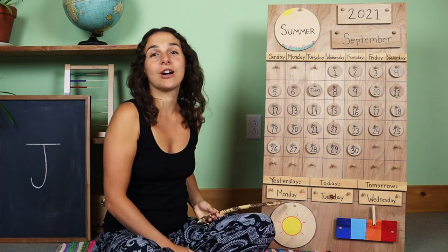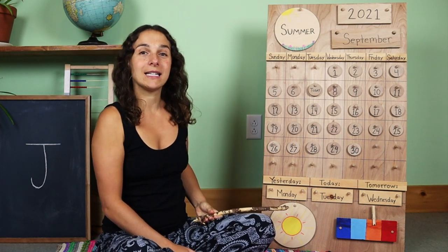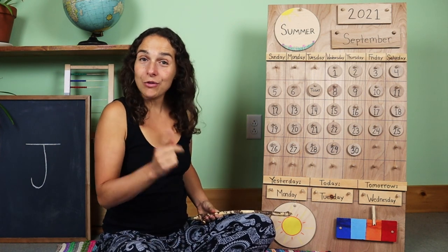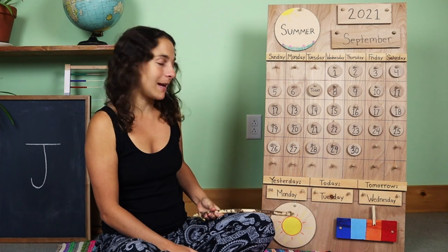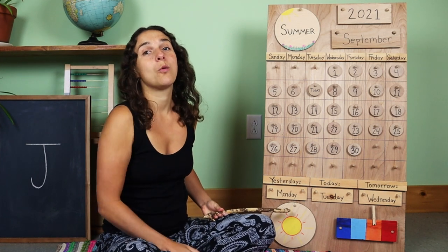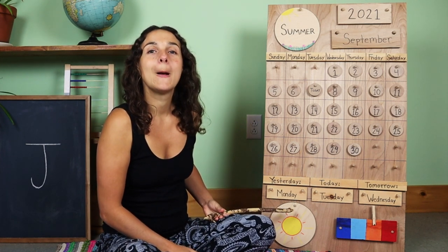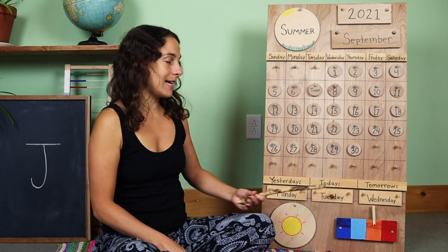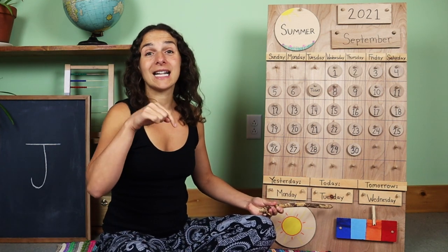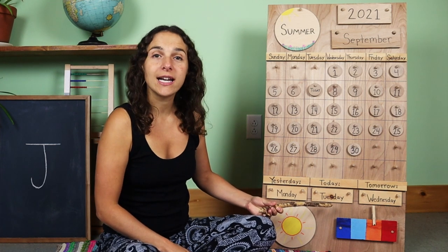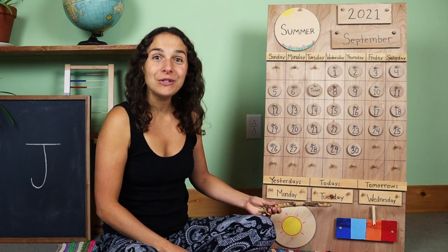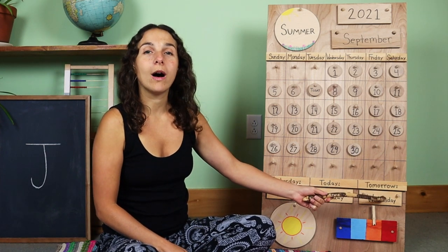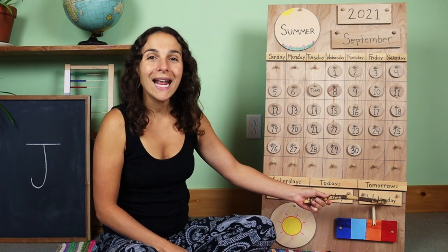Let's go down to the bottom of the chart and go over the days of the week together. Here's the sound that the day starts with. If you know what the day is, you can say it with me. Yesterday was M — Monday, the first day of the weekday. That means that today is T — Tuesday. Tomorrow will be W — Wednesday.